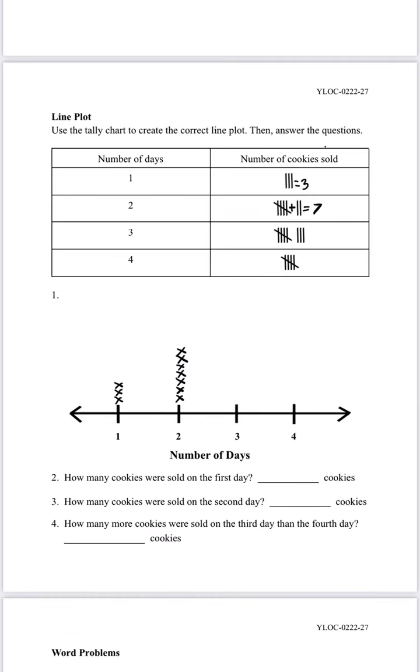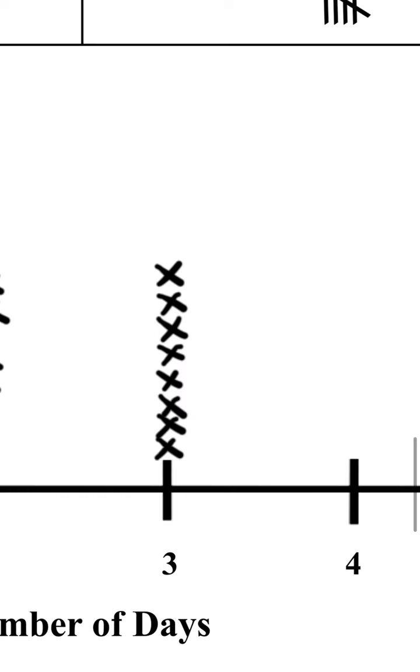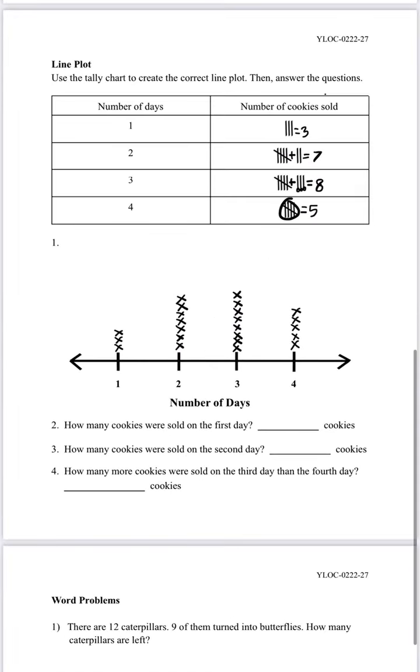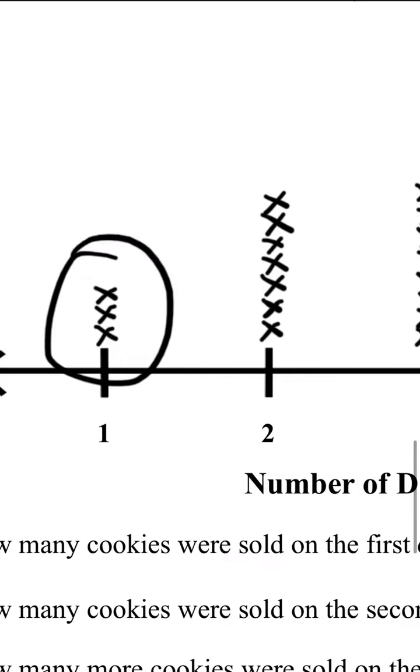Now let's look at three: there are five and one, two, three, so five plus three is eight — we need to put eight x's above number three. And lastly for number four we need to put five x's above it. Let's look at the question: how many cookies were sold on the first day? It shows that three cookies were sold on the first day, so three is the answer.